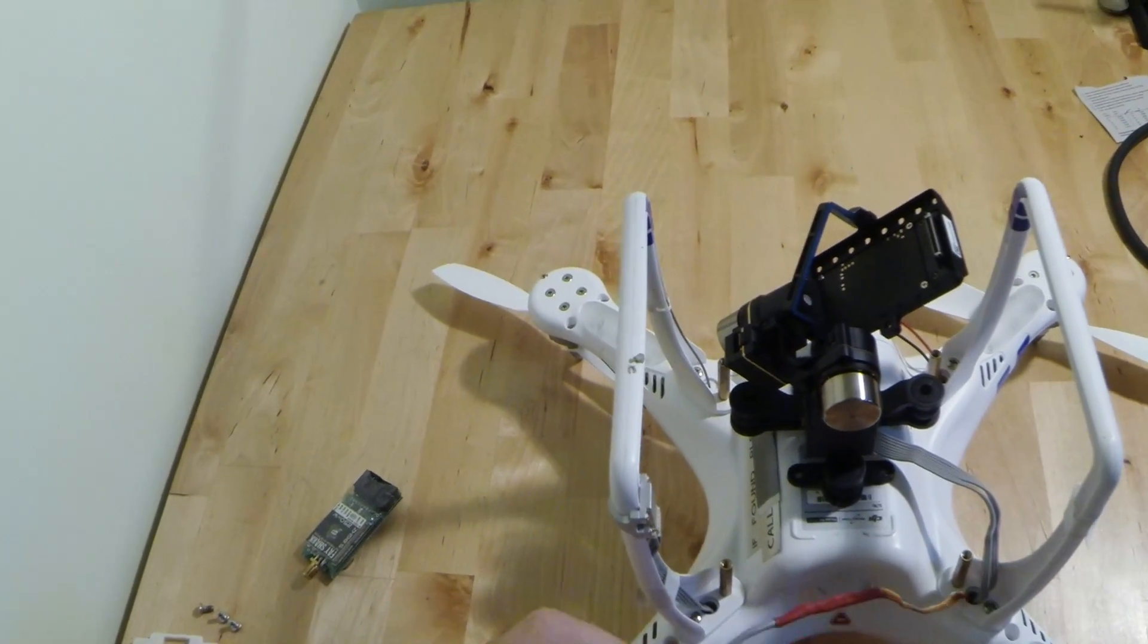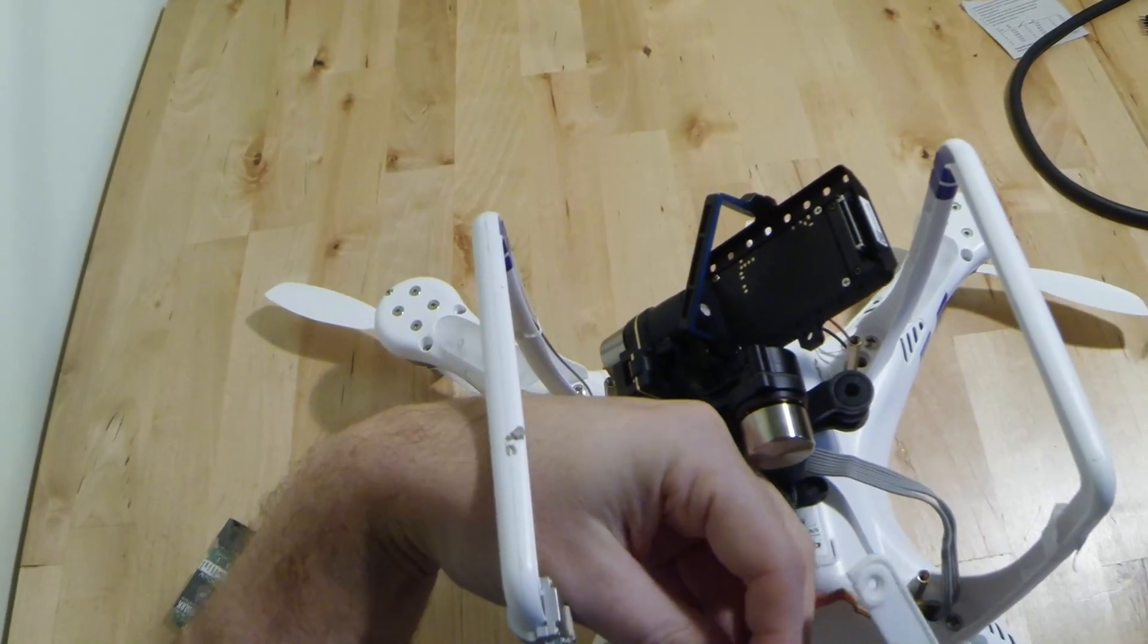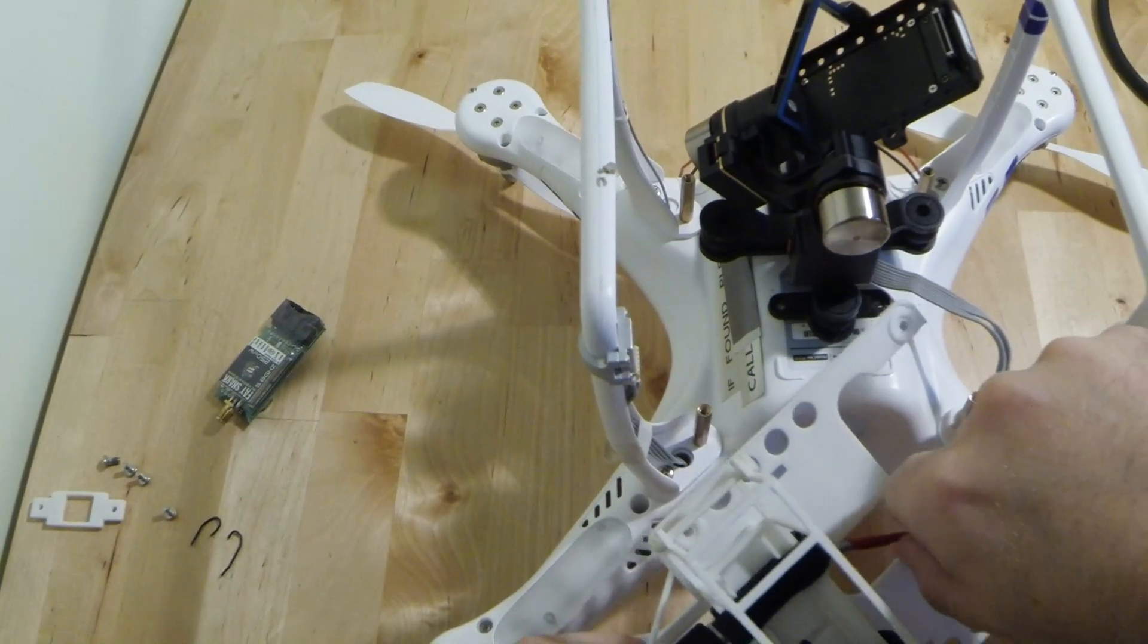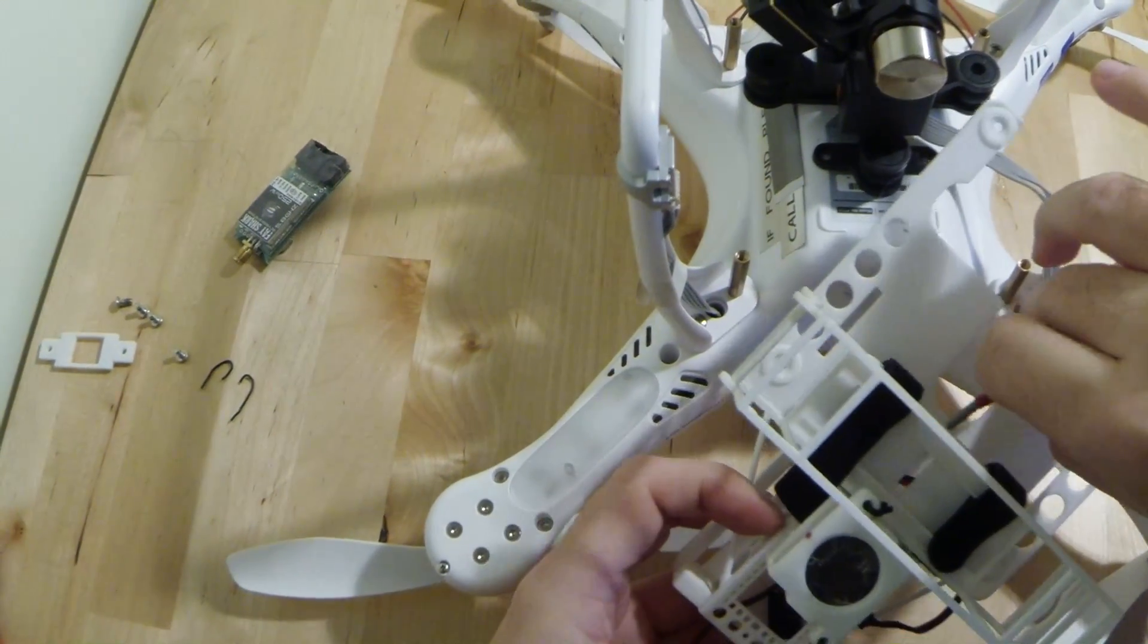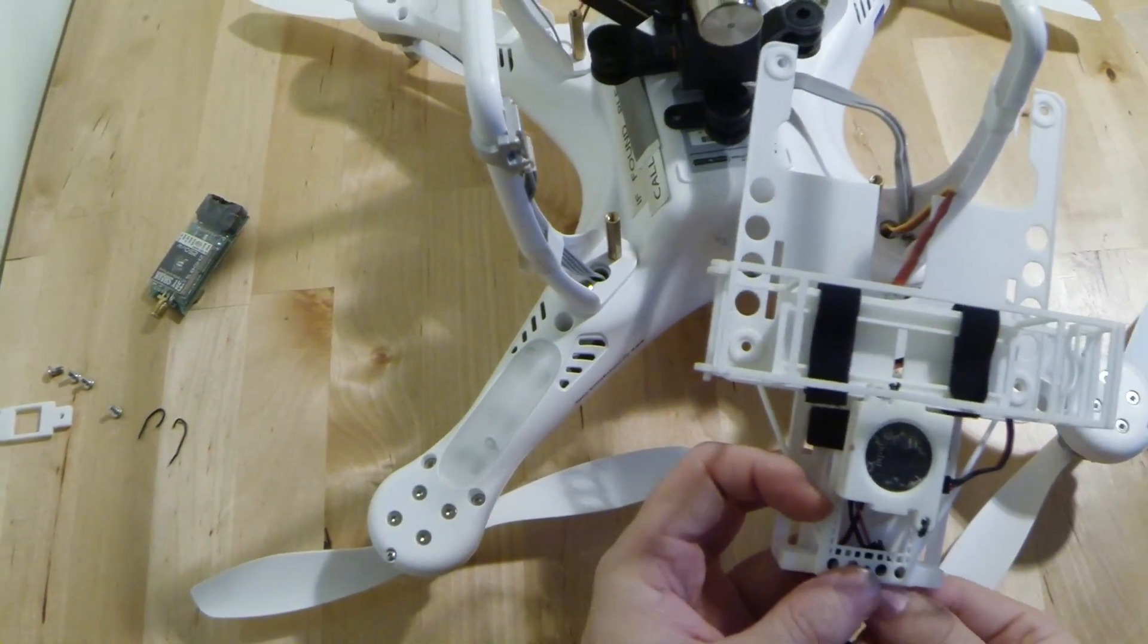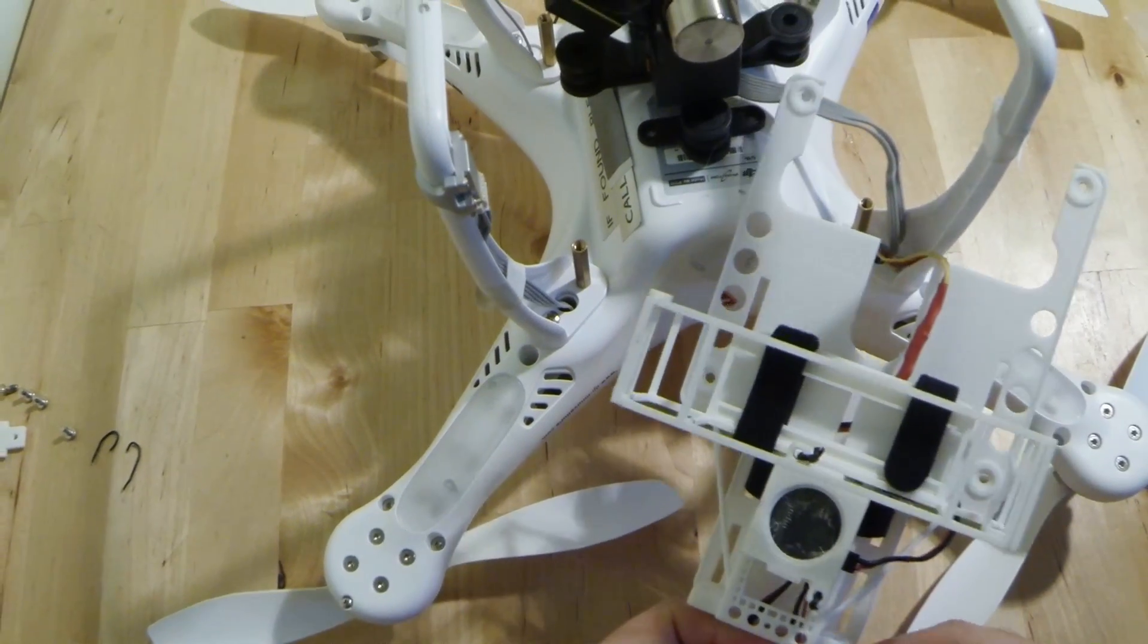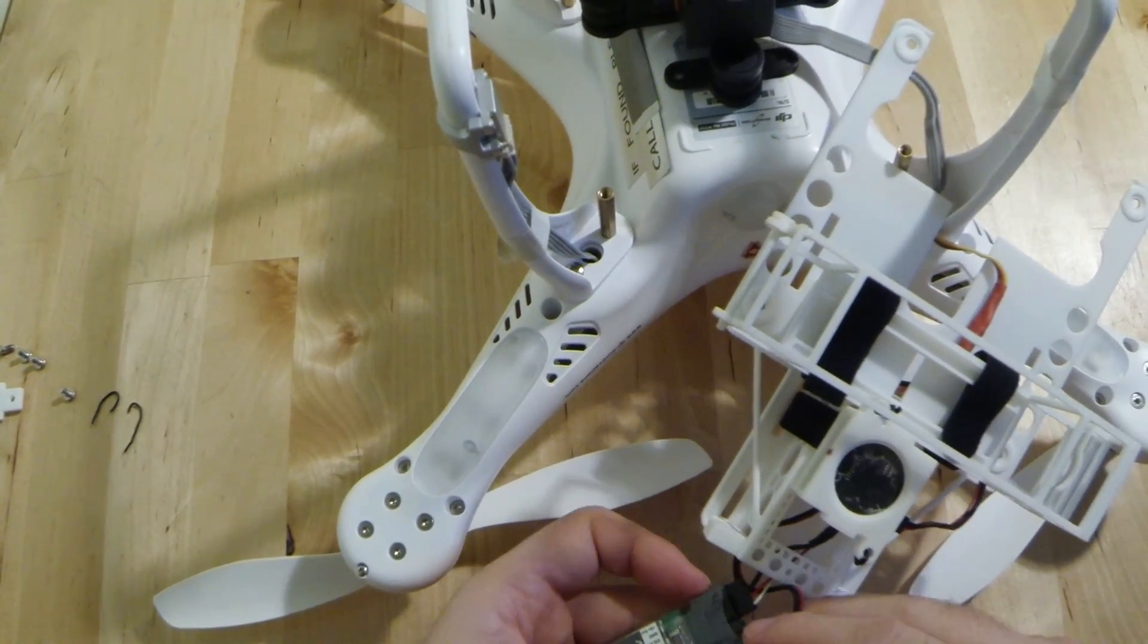Okay, so the other thing that we're going to do before we actually slide it on and screw it down is we're going to take the video output cable and we're going to slide that down the back. And out front. And then we're going to grab our transmitter. Make sure the cable is in the right position. And we're going to slide that on.